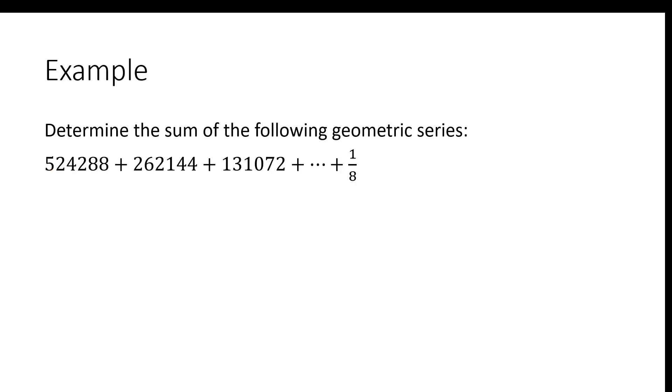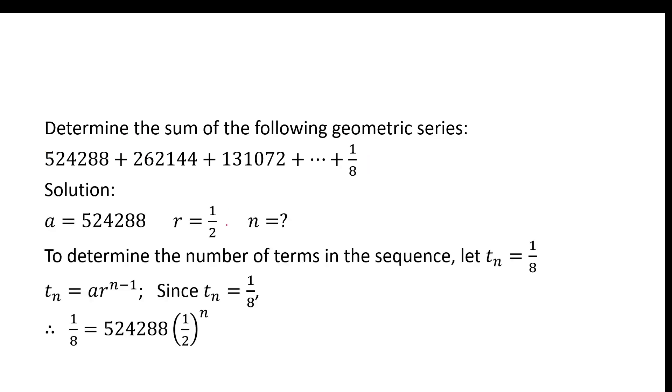Now, we can also do it in this next case. We see that we're told it's a geometric series, so we know that. We know our formula will apply. Our A value will be 524,288. Our R value will be whatever term 2 divided by term 1 is, and we see that that is 1 half. 262,144 divided by 524,288 is 1 half. But we might be curious, what does N equal? Well, the one way we can do that is to let term N equal 1 eighth.